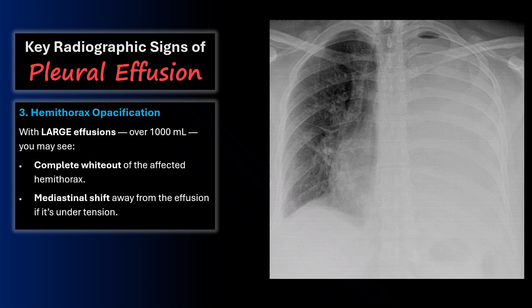Third, you may see opacification of the hemithorax. With a large effusion — over a thousand milliliters — you may see complete white-out of the affected hemithorax, and sometimes a mediastinal shift away from the effusion if it's under tension.